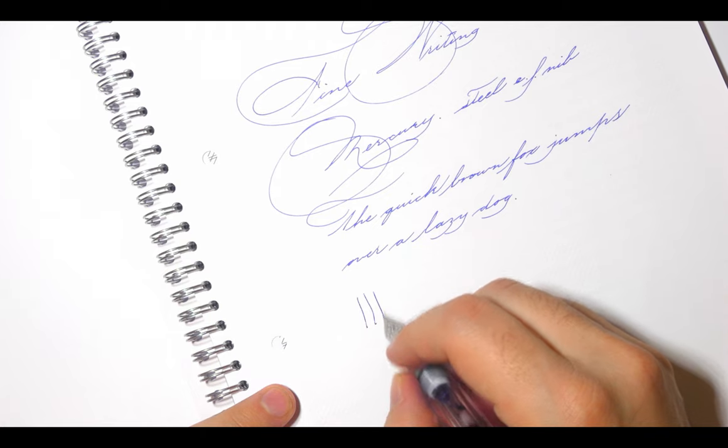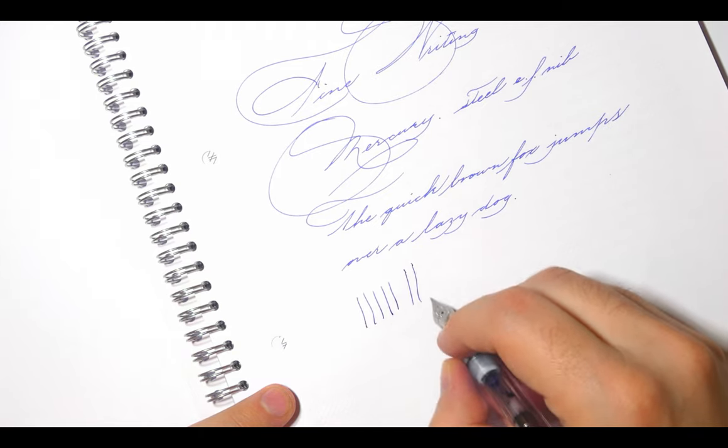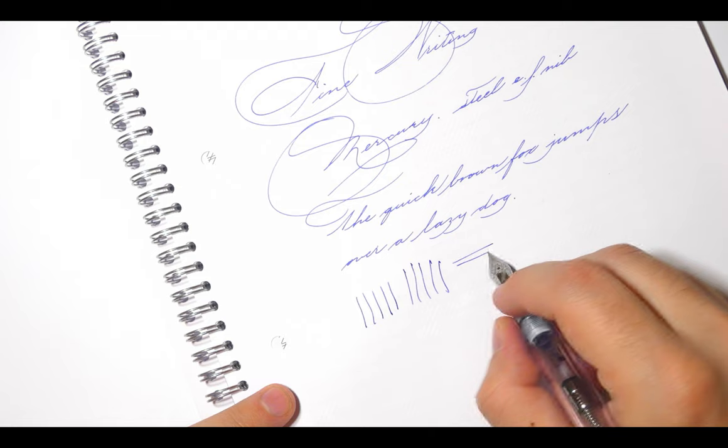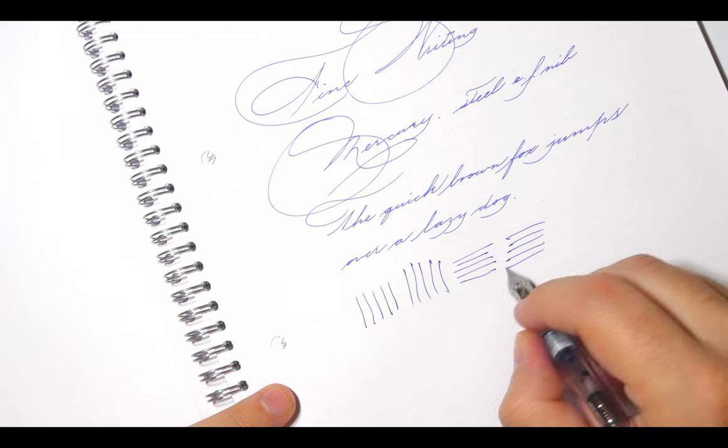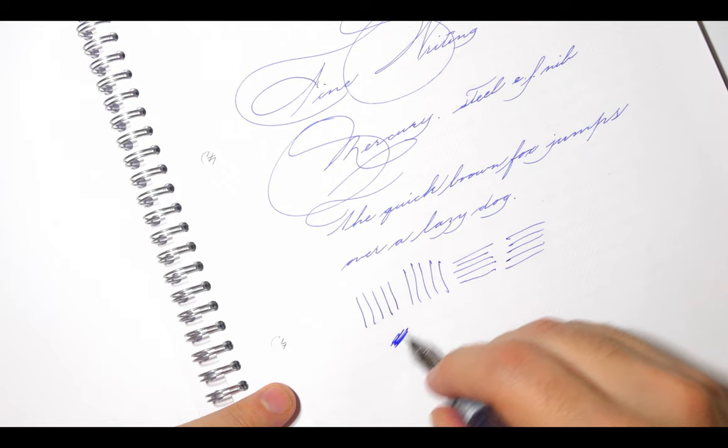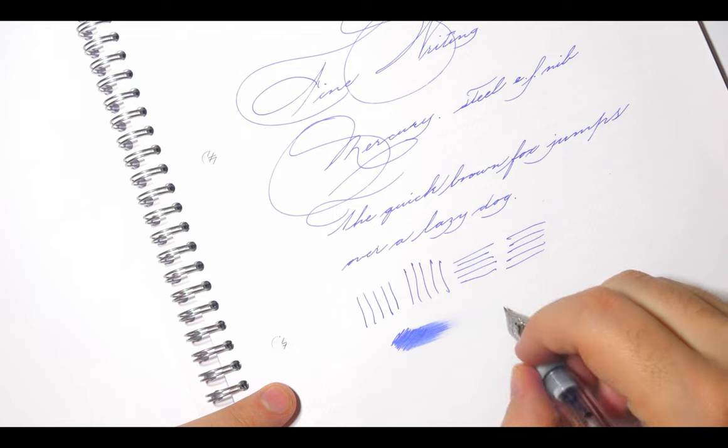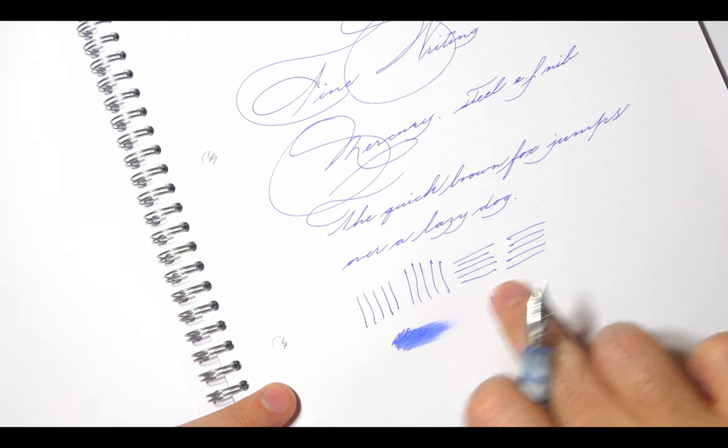The nib is made of stainless steel and it is stiff. So there is no point in looking for line variation. For all my writing samples I use the Waterman blue to have a consistent comparison between the nibs to see if they are dry or wet. In this case I find the nib moderately wet for an extra fine tip.